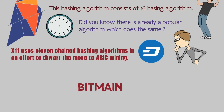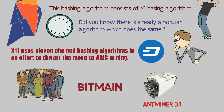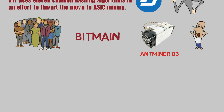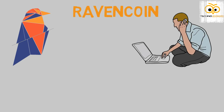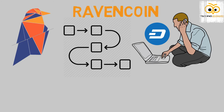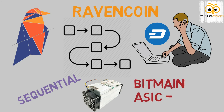But Bitmain, with its genius research and development team, was able to create an ASIC for Dash known as the Ant-D3 — so Dash was ASIC'd. The developers then analyzed why this happened and found the reason to be the sequential flow of the algorithm changes, which is why Bitmain was able to create an ASIC for Dash.